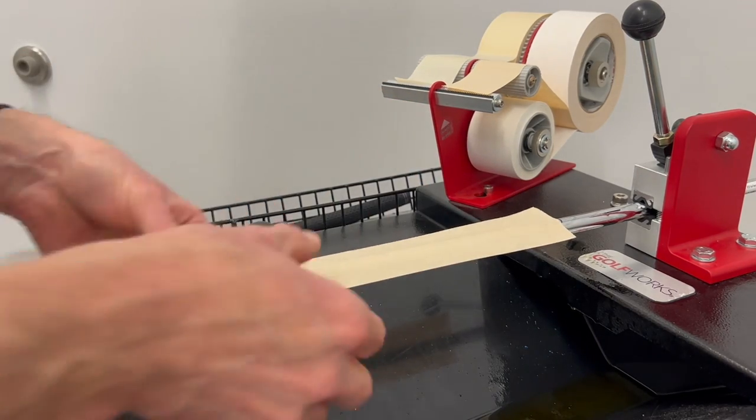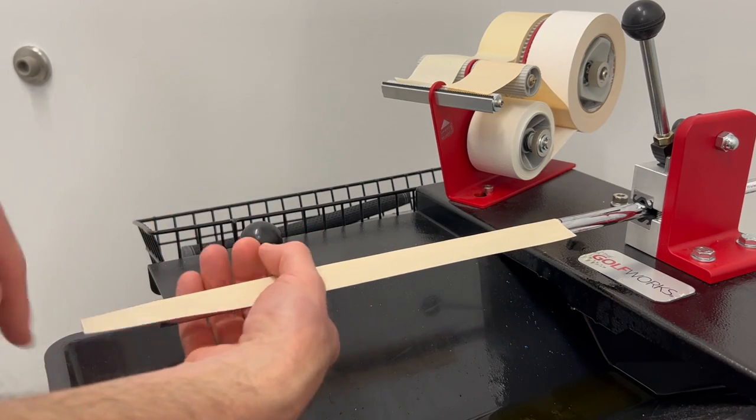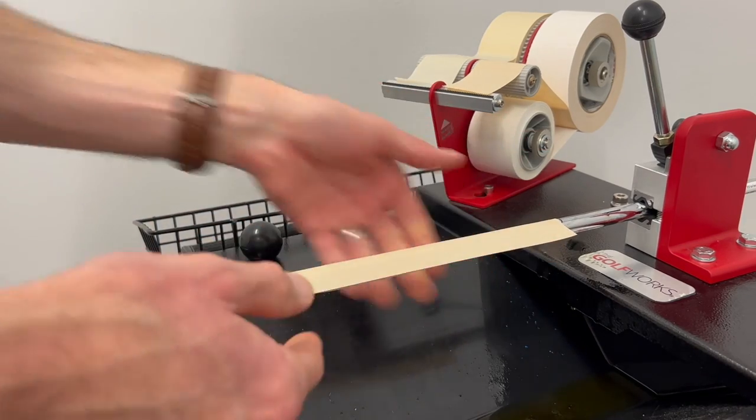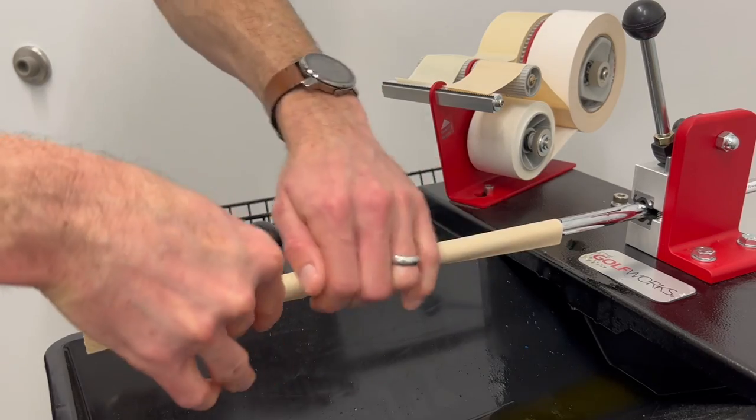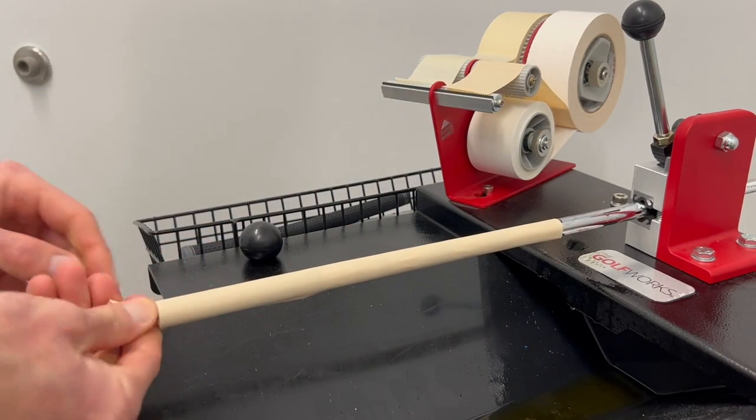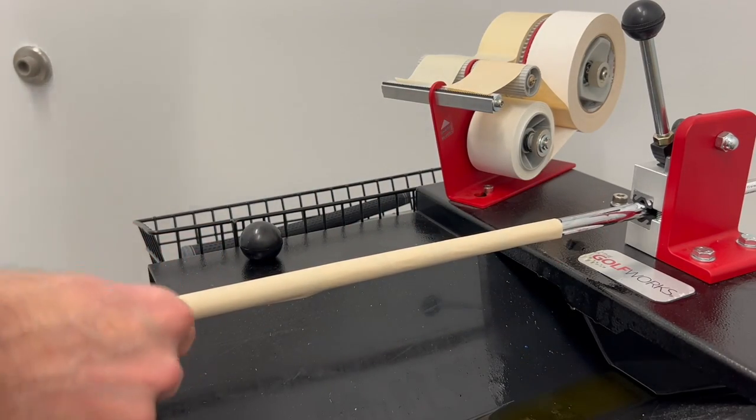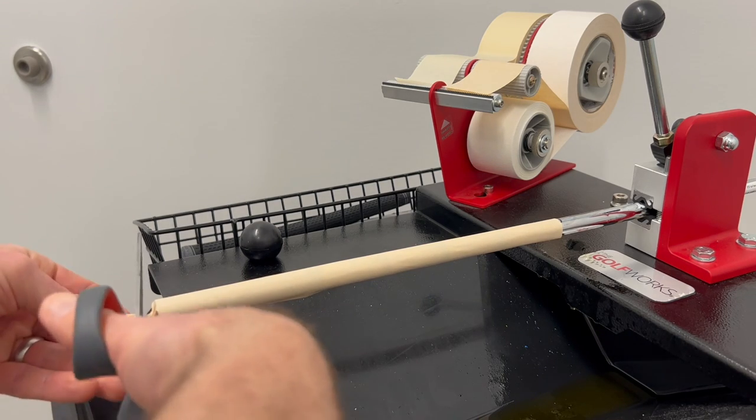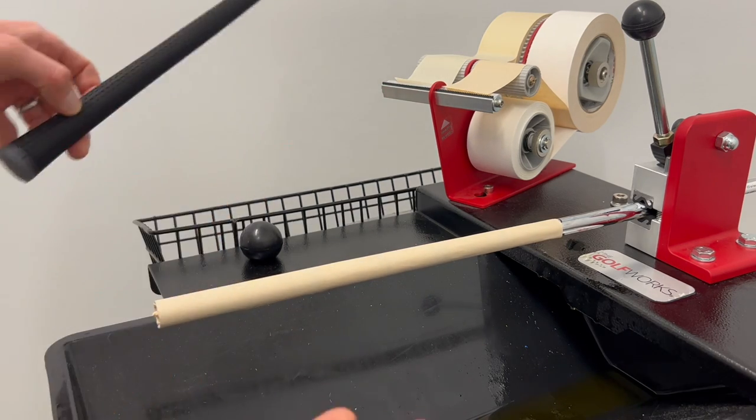Then we're just going to install this tape as we usually do. Wrap it around one side, wrap it around the other side, twist off the end, cut off the excess.